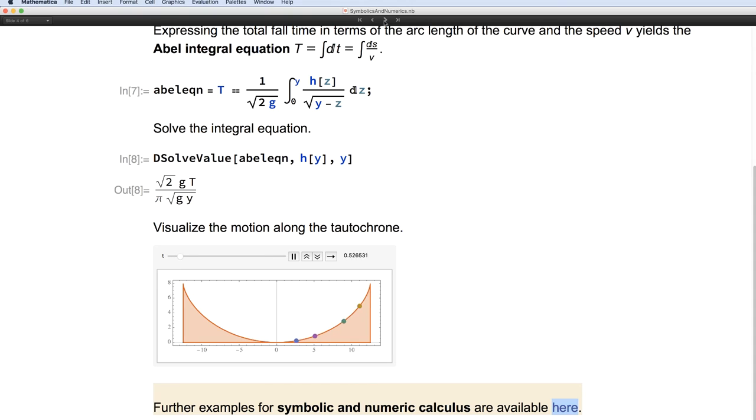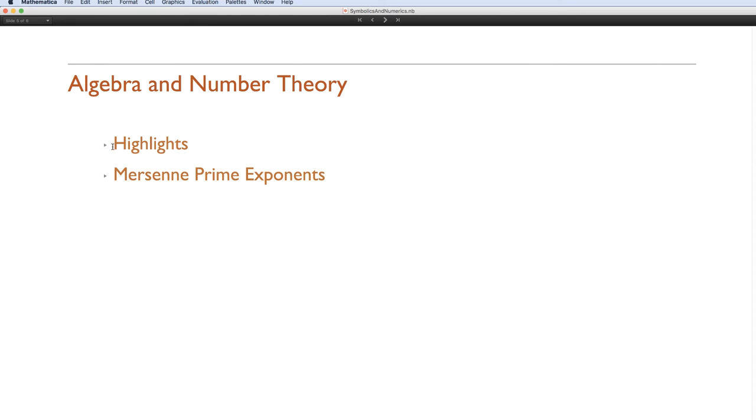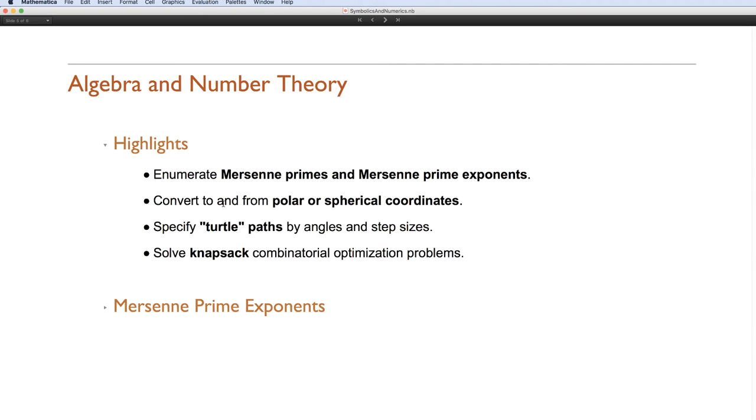And finally, go on to algebra and number theory. So over here, perhaps the most interesting for people who like number theory is that we can now enumerate all the Mersenne primes, the known Mersenne primes, and Mersenne prime exponents. You can convert to and from polar spherical coordinates. That looks easy, but to do it correctly is often quite hard. And we can do it now. You can specify turtle paths using the new angle path function. And the knapsack problem is one of the hardest problems in optimization. And we now have a wonderful function to do that for you automatically.